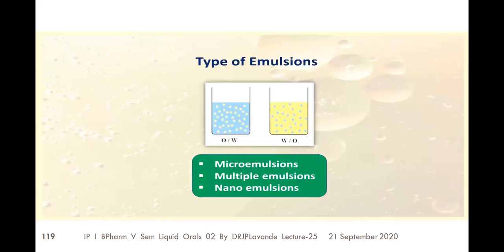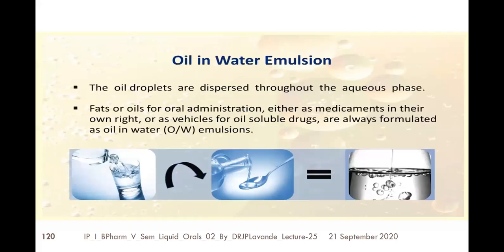Types of emulsions include: OW type (oil in water) and WO type (water in oil). Additionally, based on globule size there are micro emulsions, nano emulsions, macro emulsions, and multiple emulsions such as O/W/O (oil in water in oil) or W/O/W (water in oil in water). In an oil-in-water emulsion, oil droplets are dispersed throughout the aqueous phase. Fats and oils are given for oral administration either as medicaments in their own right or as a vehicle for oil-soluble drugs.